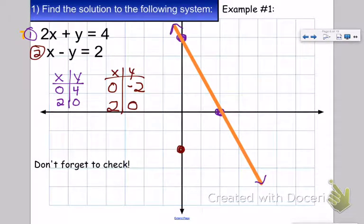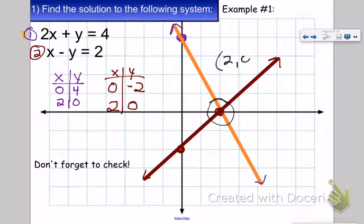Let's go ahead and plot those points. And it just so happens that that line has an intersection point at (2, 0). Therefore, the answer is (2, 0).